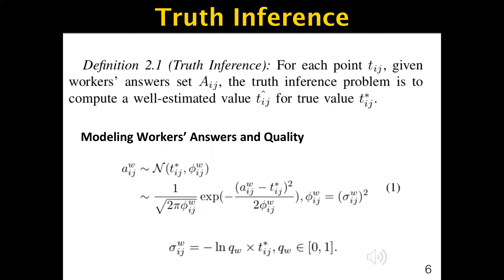The truth inference is defined as follows. For each point t_ij, given the workers' answer set A_ij, the truth inference problem is to compute a well-estimated value t_ij hat for true value t_ij star. Different from multi-choice tasks, the answers of data extracting tasks are numerical values. For a numerical task, its quality depends on how close it is to the ground truth. Formally, we use A_wi to denote the set of answers for data points in task t_ij by worker w, and we use the Gaussian distribution to model each answer given by worker w. The distribution takes the ground truth t_ij star as its mean and uses variance to model worker quality.